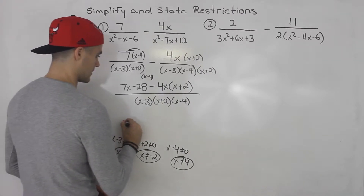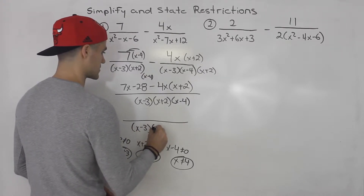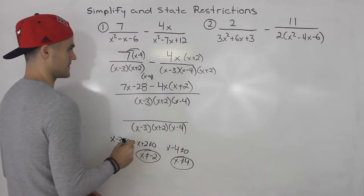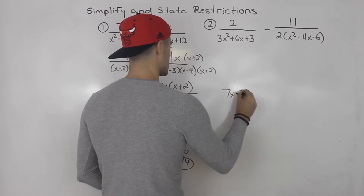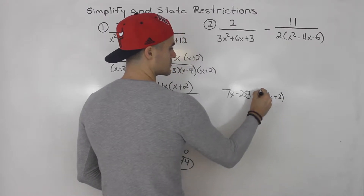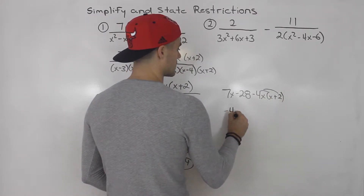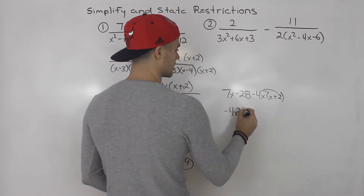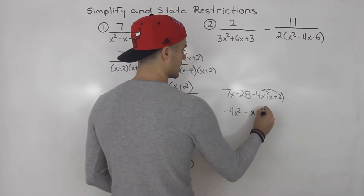The denominator will be x minus three times x plus two times x minus four. Working out the numerator on the side: seven x minus 28 minus four x times bracket x plus two gives minus four x squared. Then minus eight x plus seven x gives minus x, and then minus 28 remains.